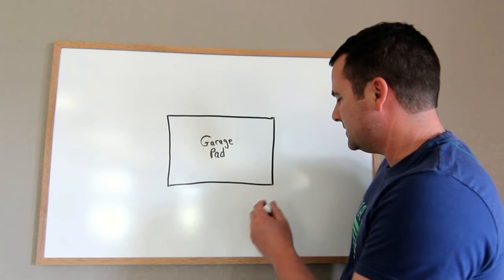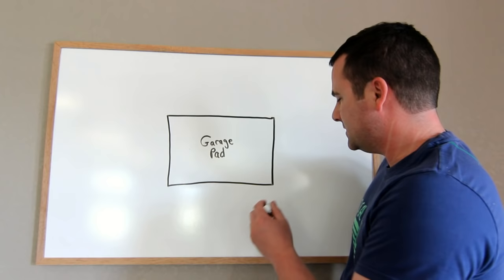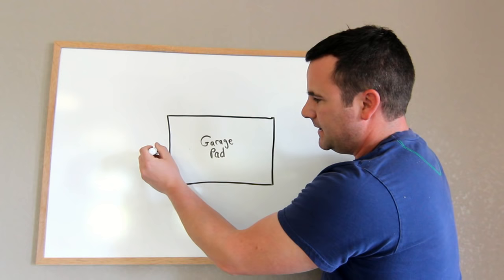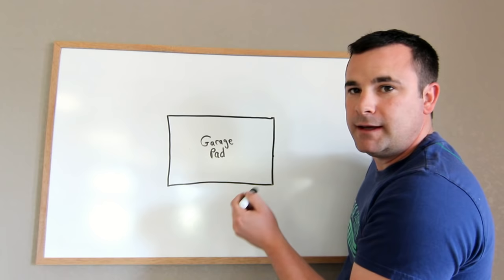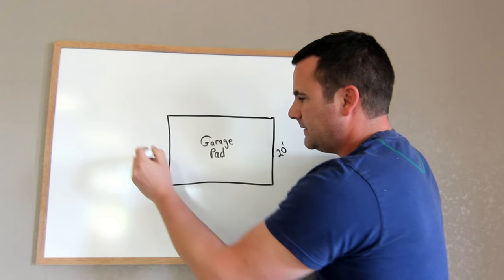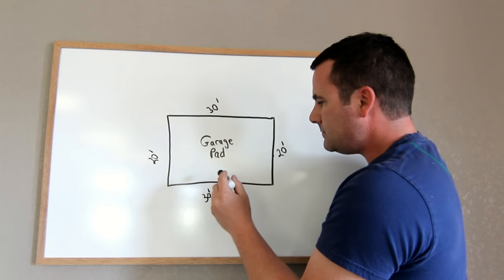And this is the clincher, is you have to, so let's say you want to check this building for square. This side, this side, and this side have to be equal lengths, right? So let's say they're 20 feet and 20 feet. They have to be the same, and let's say this is 30 feet and 30 feet. Those have to be the same.